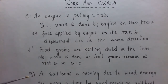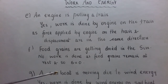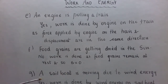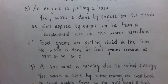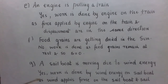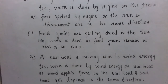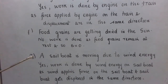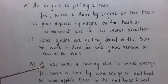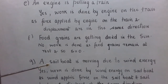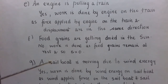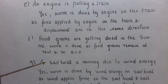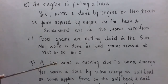Part G: A sailboat is moving due to wind energy — is work done or not? Yes, work is done by wind energy on the sailboat, as wind applies force on the sailboat and the sailboat gets displaced in the same direction. Work is also done against the resistance between the water and the surface of the sailboat.